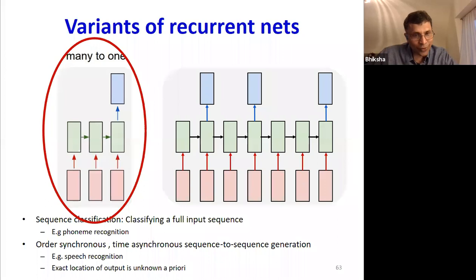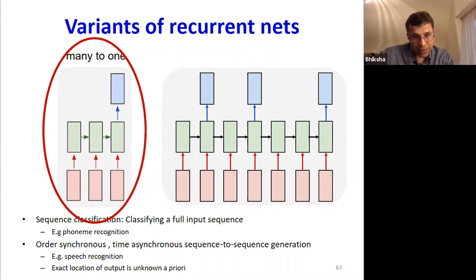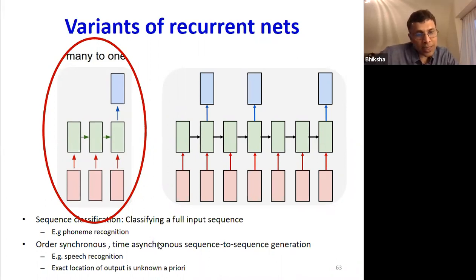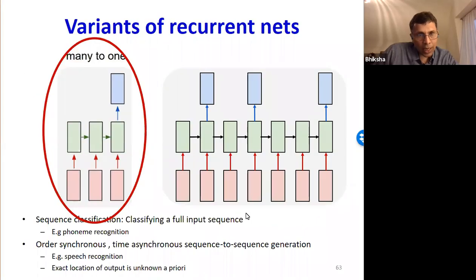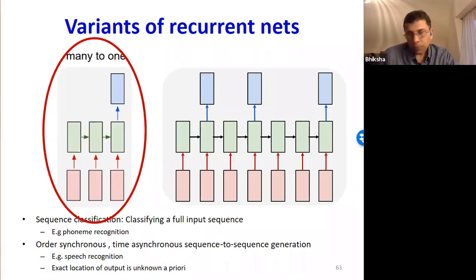There are only 73 people in class today. So this distinction between time-synchronous and order-synchronous is something we're going to build on. Let's continue with the different network variants and go back to this problem.